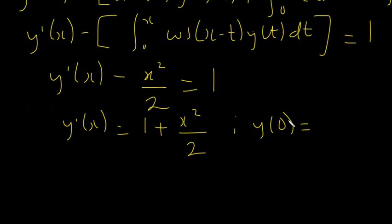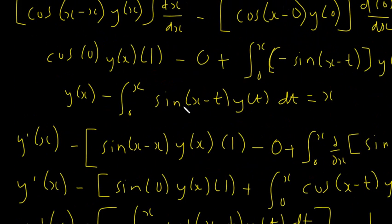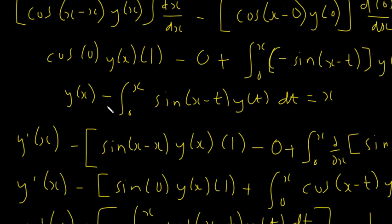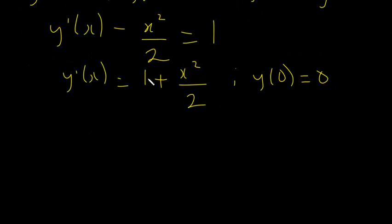From our first differentiation result, y(x) minus the integral from 0 to x of sine(x minus t) y(t) dt = x. Substituting x = 0: y(0) minus the integral from 0 to 0 (which is zero) = 0. So y(0) = 0. That is our initial condition.